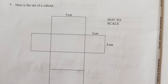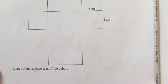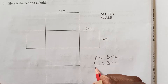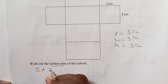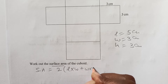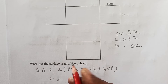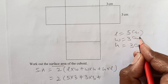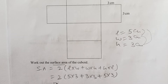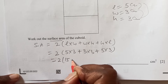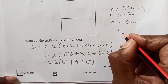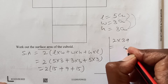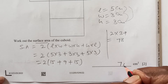Question 7. Here is a net of a cuboid. Work out the surface area of the cuboid. We have length 5 centimeters, width 3 centimeters, and height 3 centimeters. The surface area formula is 2 times (length times width + width times height + height times length). So 2 times (5×3 + 3×3 + 5×3) = 2 times (15 + 9 + 15) = 2 times 39 = 78 square centimeters.